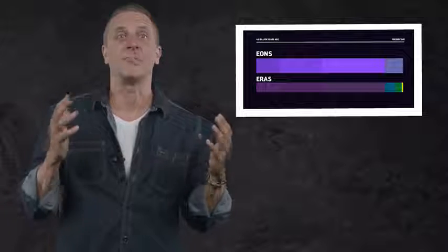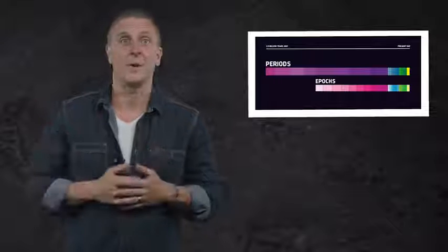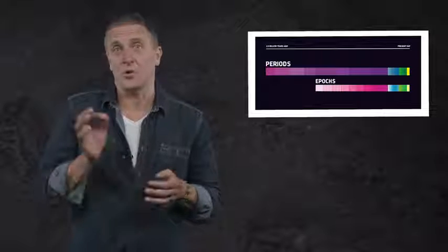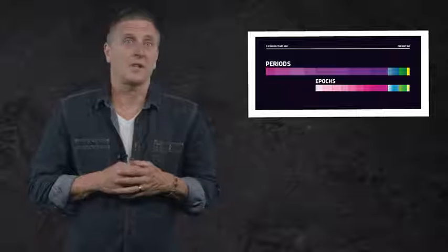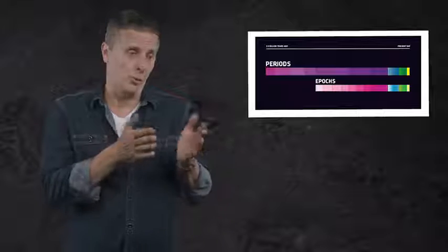In the largest increments, like eons and eras, we can ask the biggest big-picture questions: Was there life on Earth at this time? What did it look like? Did it live in the water or on land? This is the kind of top-level view we're going to take today. The smaller increments of time, like periods and epochs, help us take a tighter focus and ask more specific questions — like what was the climate like during a window of a few million years, and how did life around the world adapt to it? We'll be talking about those in more detail in future episodes when we discuss each era period by period.